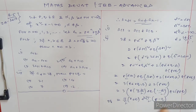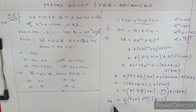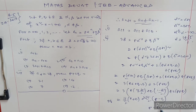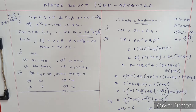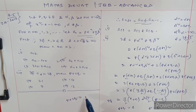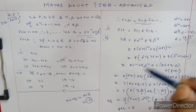Since p and q are integers, the coefficient of √5 must be zero — so p = q. And the rational part equals 28. With p = q, we get p + q = 8, so p = 4 and q = 4. Therefore p + 2q = 4 + 8 = 12.